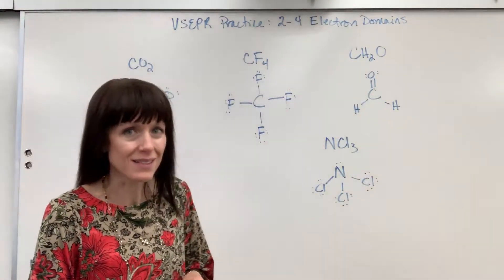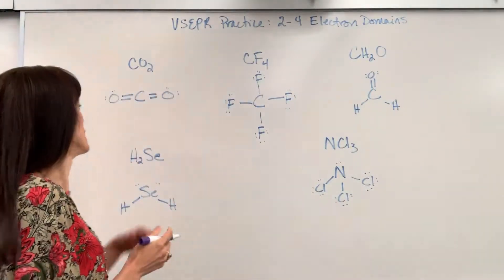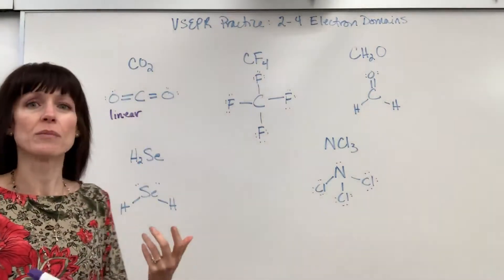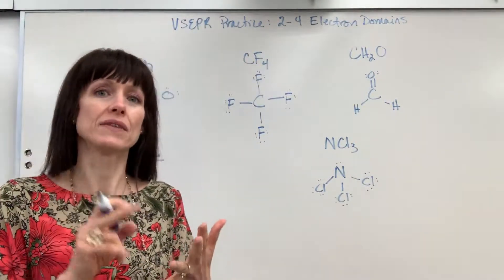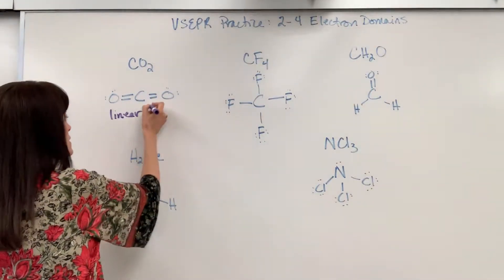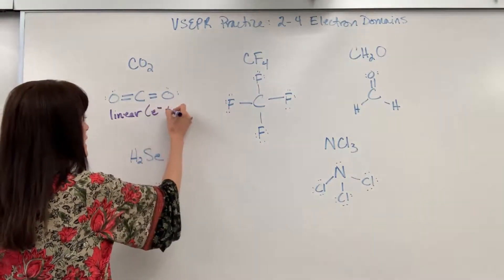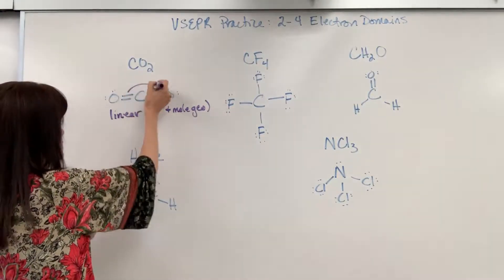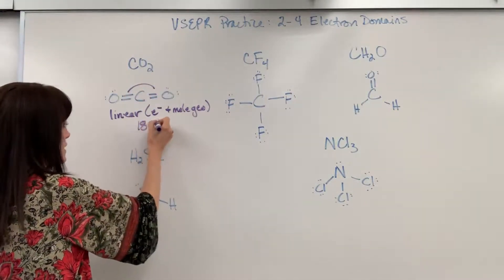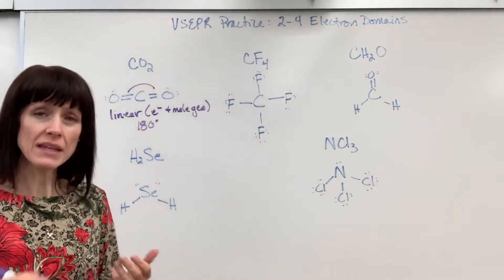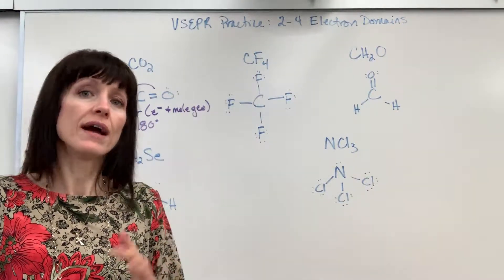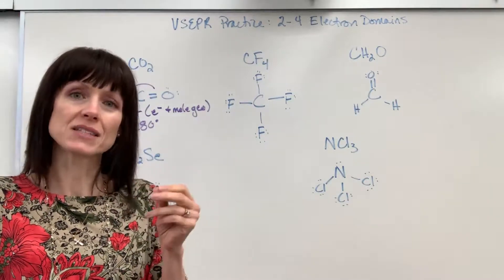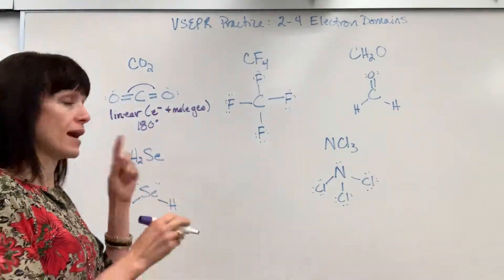Notice they're both bonded. There are no lone pairs and so this is going to be linear for both the electron geometry and the molecular geometry. The angle, the maximum angle there is 180 degrees. Now hybridization. This is where we have our SP and you can watch that video on hybridization. I need the exponents to equal the number of electron domains.